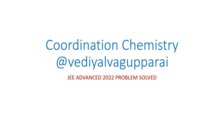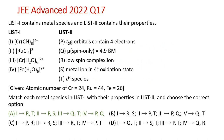Welcome to Vedial Vagaparai. In this video we are going to see one JE advanced question on coordination chemistry. This is a question from the 2022 question paper, question number 17. There are a list of complexes given along with their properties, and one important catch is that there is more than one answer for each of the complexes.